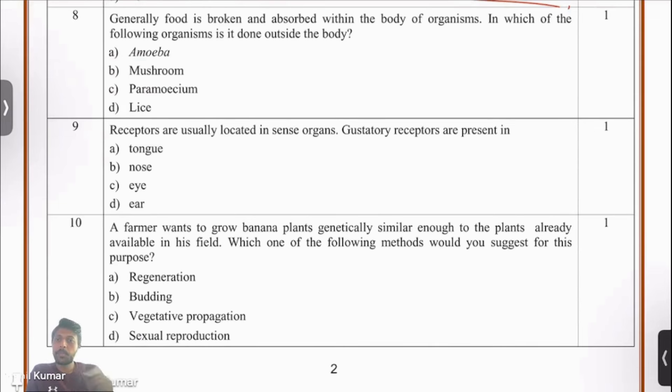Question number 8. Which of these four organisms - amoeba, mushroom, paramecium or lice - digest food outside their bodies? Amoeba, though a single cell organism, engulfs the food and then digests it within the body itself. If you look at mushrooms, they don't have a digestive system. What they do is they release some digestive enzymes in their surroundings. Once those enzymes break things down, then they absorb those broken nutrients. So it must be mushroom. Paramecium digests food within their bodies, inside their bodies. Lice is a multicellular organism and also digests food inside its body.